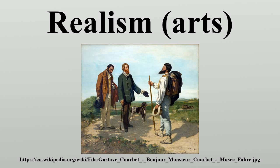Key works of the Realist Movement include: Gustave Courbet, Stonebreakers, 1849; Jean-François Millet, The Gleaners, 1857; Honoré Daumier, Les Joueurs d'Échecs, 1863; Jean-Baptiste Camille Corot, Young Girl Reading, 1868.